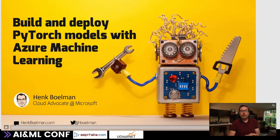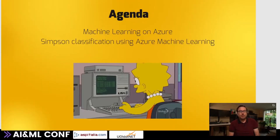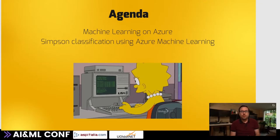So what are we going to talk about this coming 45 minutes? We're going to talk about machine learning on Azure, and we're going to build a Simpsons classification model using PyTorch and Azure Machine Learning.